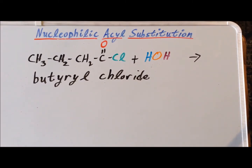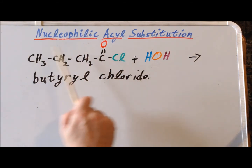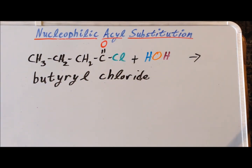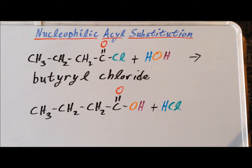Our fourth and final reaction involves butyryl chloride, which is this particular acid chloride, being hydrolyzed by H2O. The products of the reaction are the four-carbon carboxylic acid which we call butyric acid, as well as hydrogen chloride. Please see the following figures showing the computed structures of the reactants, the products, and the transition state for the hydrolysis of butyryl chloride.